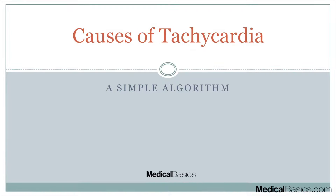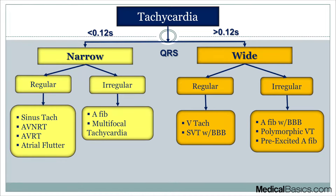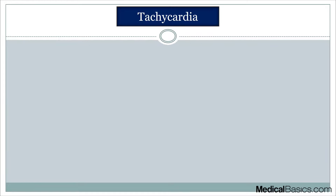In this video, I'm going to be walking you through my approach to the different types of causes of tachycardia. We're going to be walking through this simple algorithm right here. It's really broken down into narrow versus wide complex tachycardia, and then regular versus irregular. So the very first branch point that we're going to be making for tachycardia is going to be narrow versus wide.